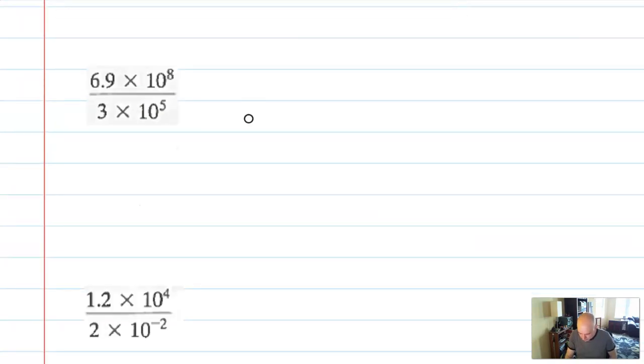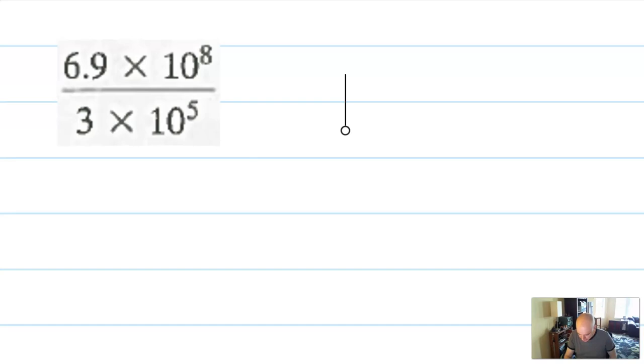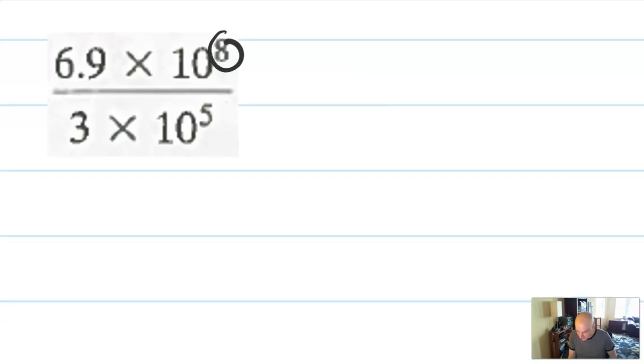But look how much easier that was than, for example, writing out the zeros. Here's another one where there's no way I want to write out eight zeros and five zeros. I see people try it, and they cross out the zeros, and it's lovely and great, and it's a silly way to solve this problem.